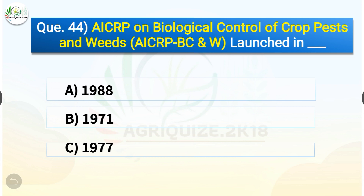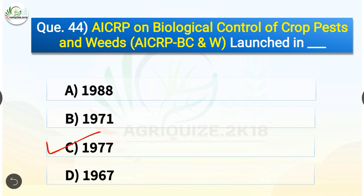Question number forty-four: AICRP on biological control of crop pest and weeds was launched in which year? The options are: 1988, 1971, 1977, or 1967. The correct answer is option C — 1977. AICRP on biological control of crop pest and weeds was launched in 1977.